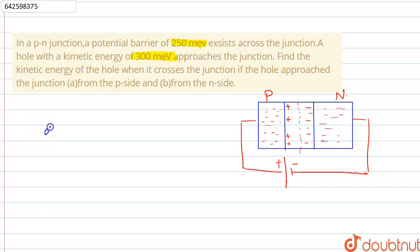And kinetic energy of hole is given to us as 300. Now we know if this is forward bias, what will happen is the kinetic energy of the hole will decrease.